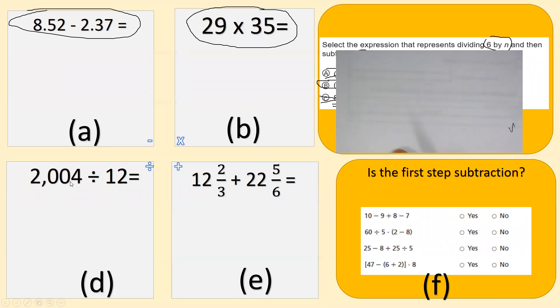2,004 goes on the inside and we're going to divide it by 12. We're going to make groups of 12. The first thing that we're going to go into is 20. You could take away one group of 12 from 20 and then there's 8 left over. Bring down the 0. You have 12, 24, 36, 48, 60, 72, so 6 groups of 72. We have 8 left over. Bring down the 4.